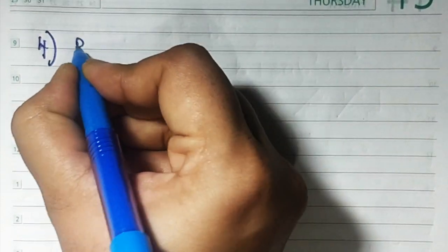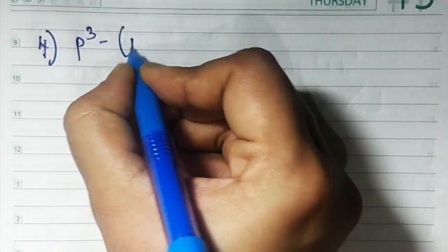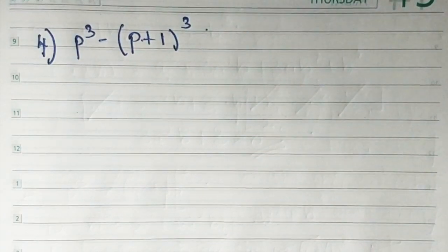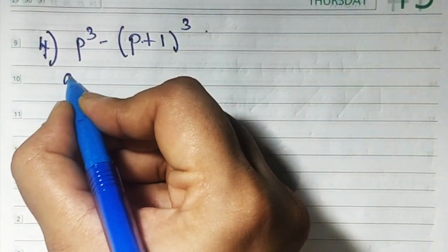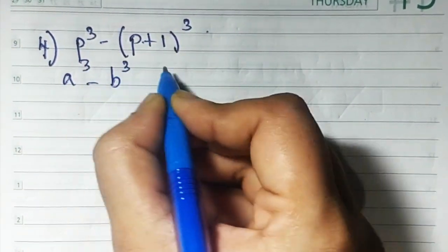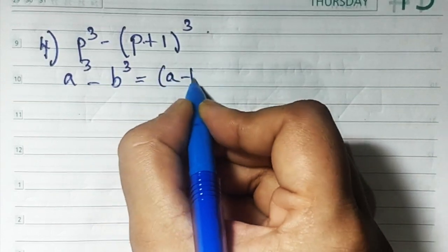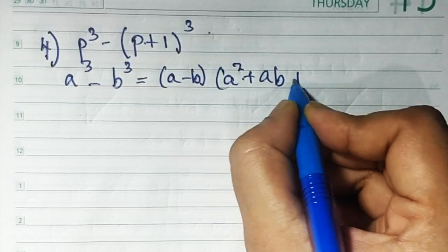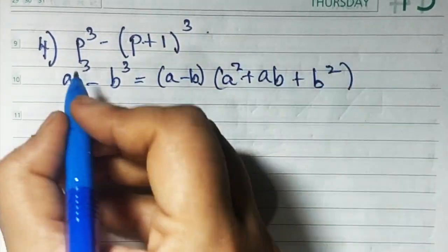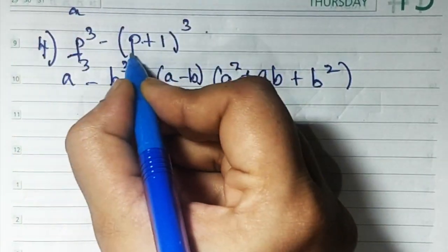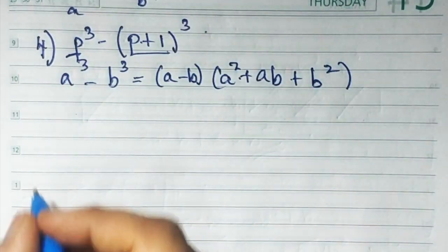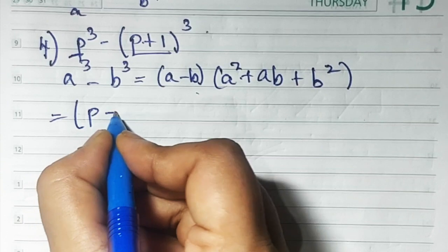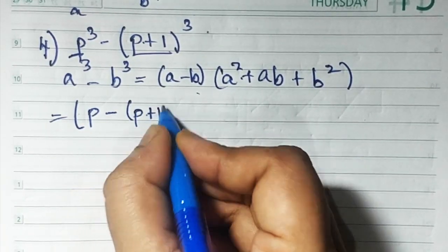Sum number 4 is p cube minus (p + 1) the whole cube. We use the a cube minus b cube formula: a minus b times a square plus ab plus b square. Here a is p and b is (p + 1). Substituting: a minus b means p minus (p + 1).